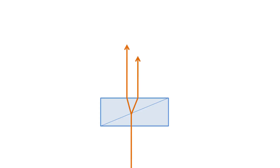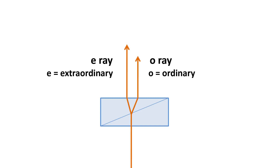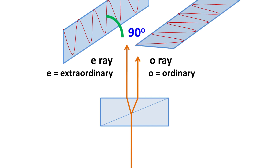Nomarski prism splits the incoming ray of light into two parts. One is known as the E ray or the extraordinary ray, and the other is known as the O ray or the ordinary ray. The difference between the E ray and O ray is that the electric field vectors are oriented 90 degrees with respect to one another. So if the E ray has electric field vectors oscillating vertically, then the O ray will have electric field vectors oscillating horizontally.